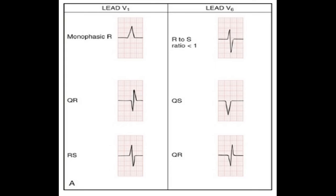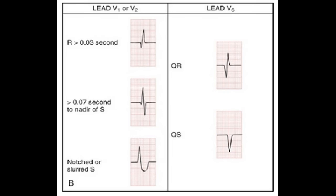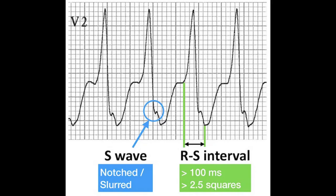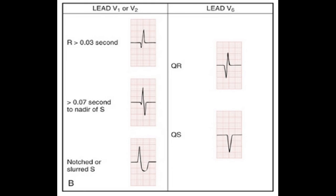Step four is the morphological pattern. There are two types: right bundle branch block pattern (RSR) or left bundle branch block pattern in V1. For RBBB: VT if there is a monophasic R wave, biphasic small Q large R, left rabbit ear taller than right, or small R followed by big S in V6. For LBBB: VT if there is a Q or QS wave in V6, a wide R wave in V1 or V2 of 40 milliseconds or more, a Josephson sign (slurred or notched S wave downstroke), or QRS onset to S wave peak more than 60 milliseconds.